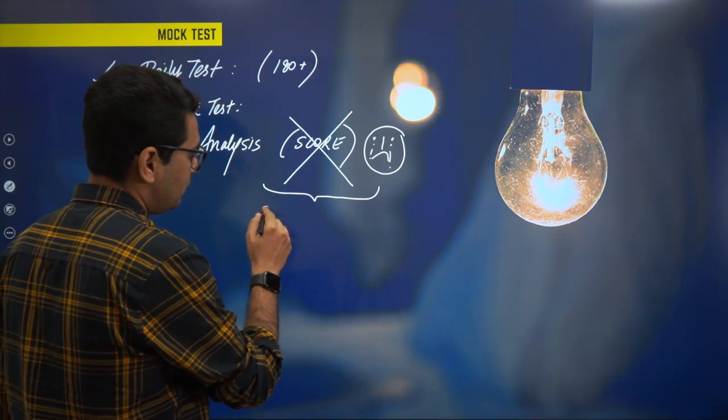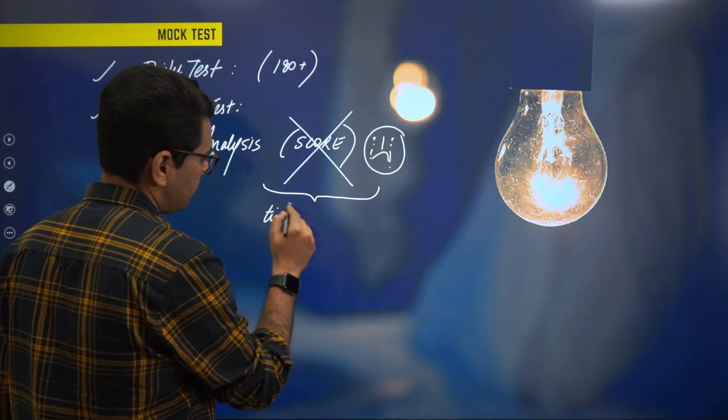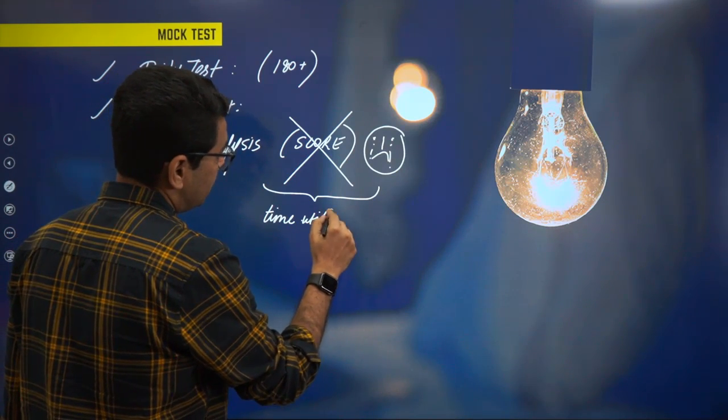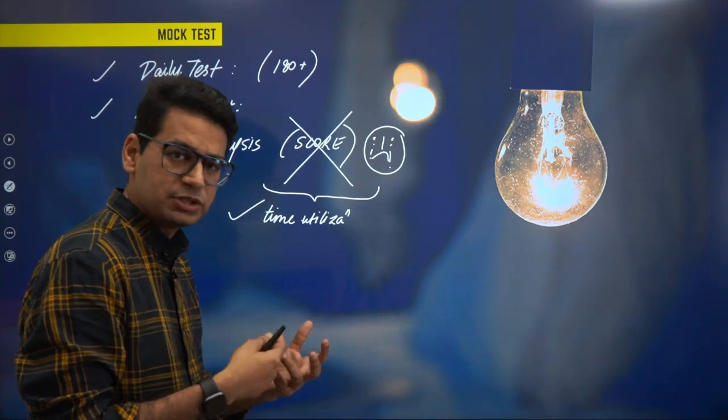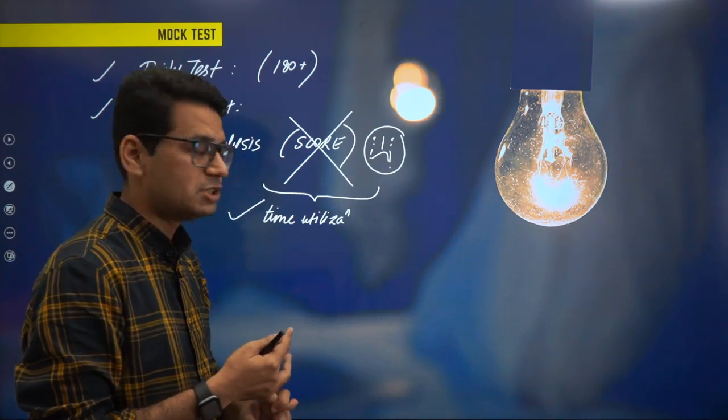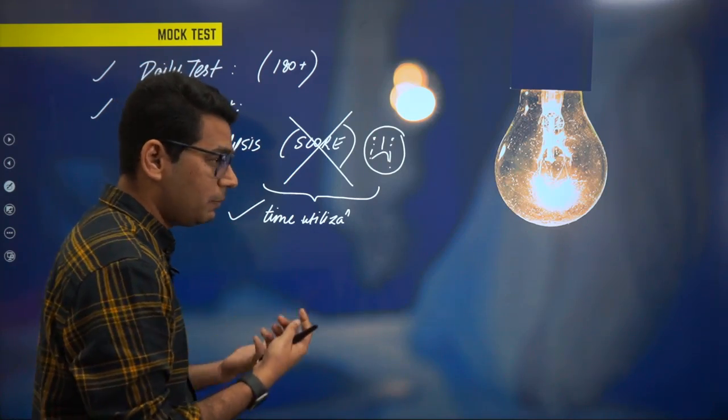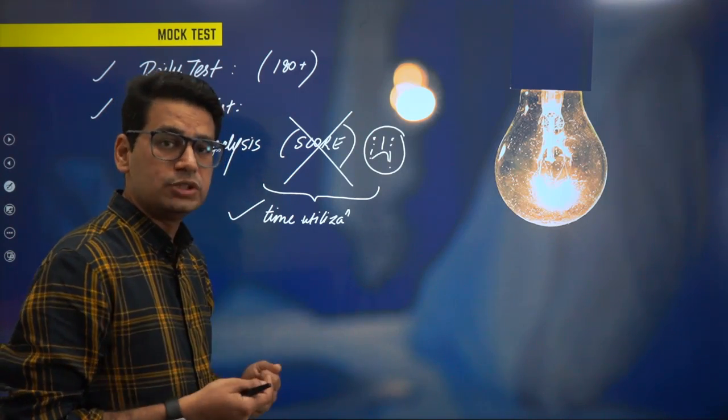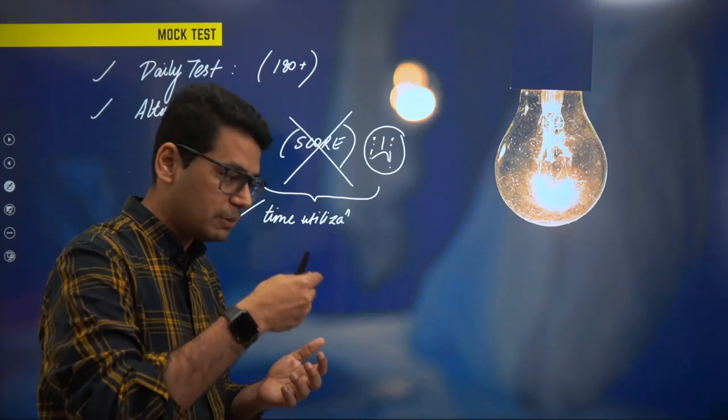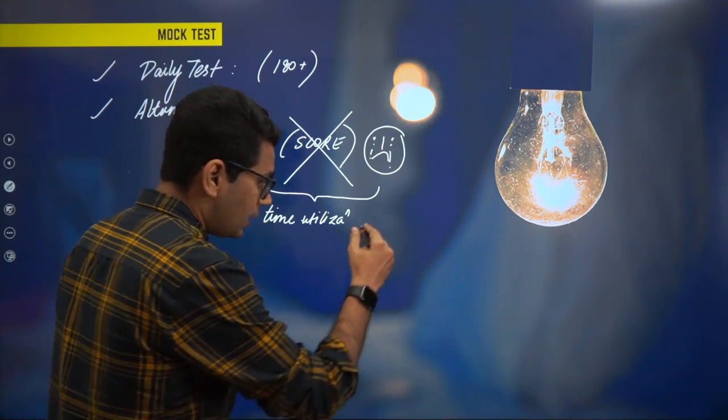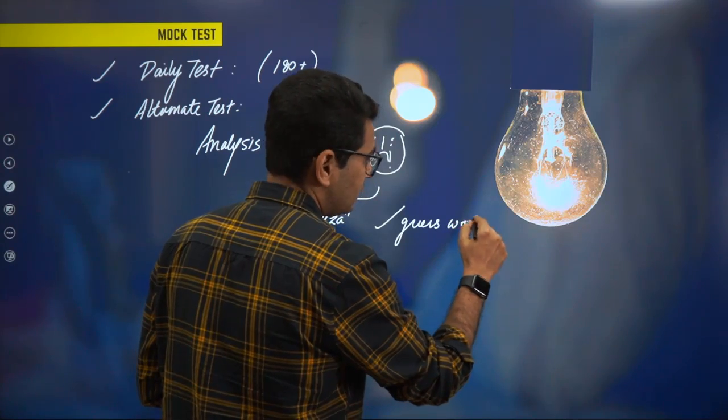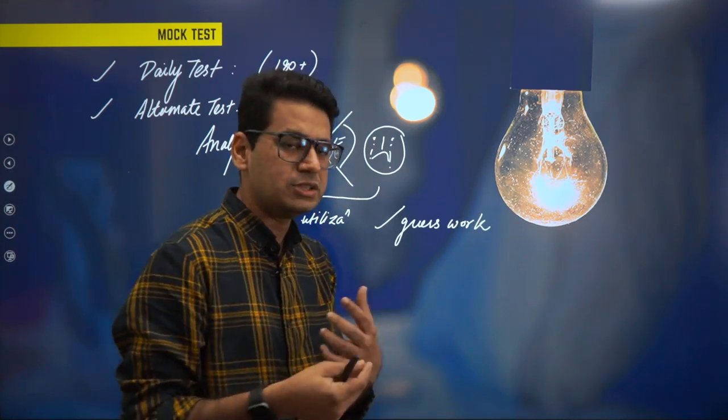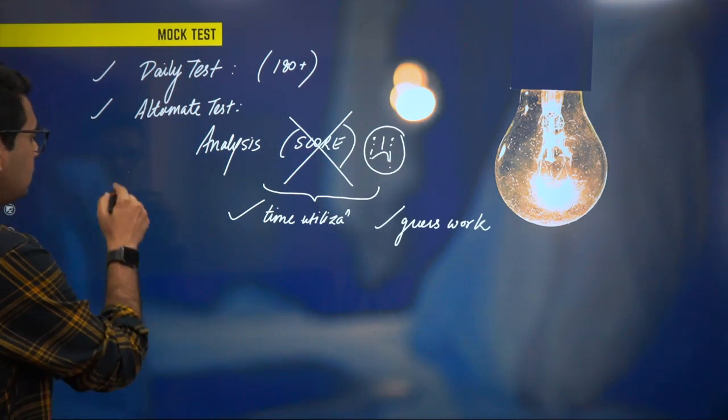Analysis mein hum log galti bar bar kya karte hain - score dekhte hain and then demoralize ho jaate hain. Ye kaam nahi karna hai. Score dekhna band kar dijiye. Score dekhoge, iske upar zyada dimag jitna laga hoge, the less is the probability that you will improve your score in the exam. Analysis mein kya karna hai - aap dekhe mera time utilization kaisa tha. Kahan main paper mein blank out ho jata hun, kahan mera concentration chala jata hai.